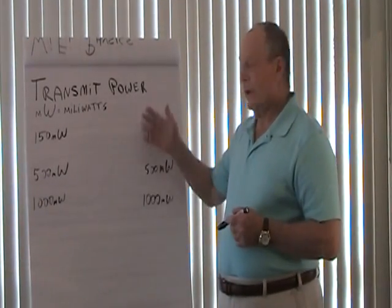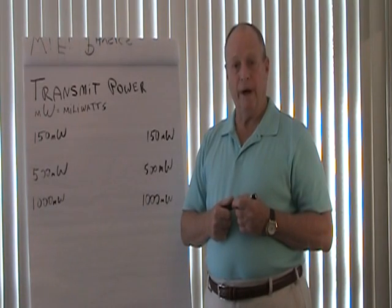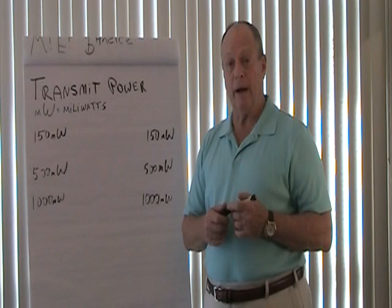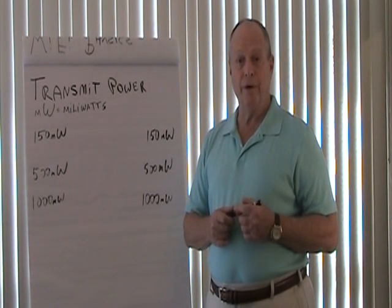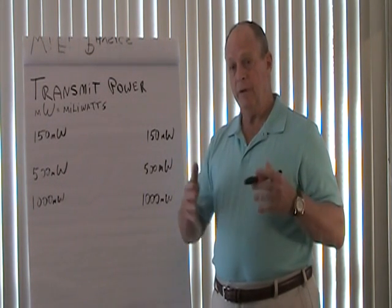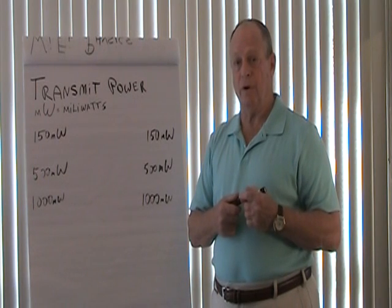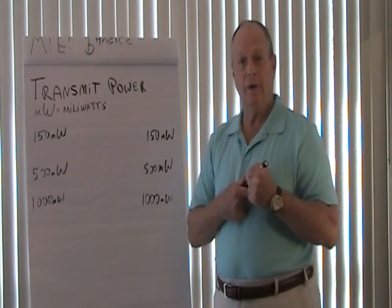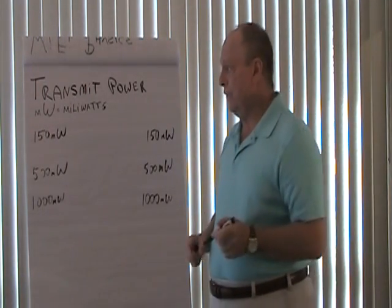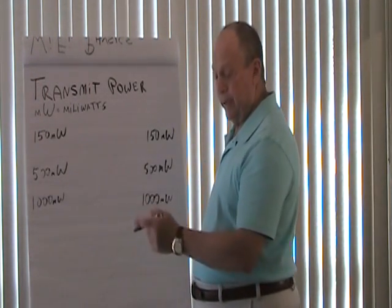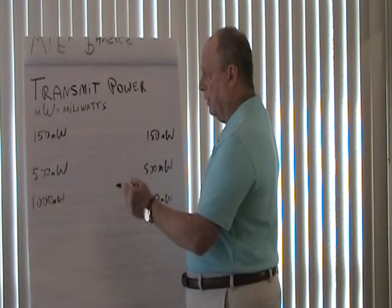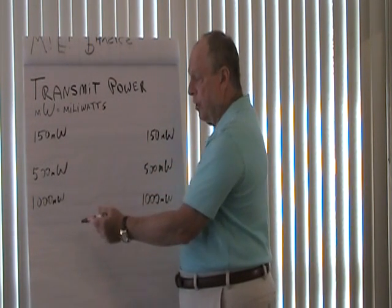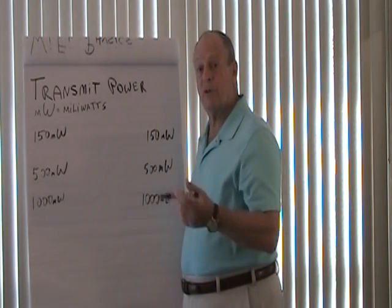Transmitters have different power ratings. A typical off-the-shelf Linksys, D-Link, or Netgear router has a power of 30 milliwatts — not very great in distance, maybe 200 to 300 feet. Let's talk about what would happen if you increase the power of a transmitter: 150 milliwatts, 500 milliwatts, or even 1,000 milliwatts, which is equal to 1 watt.